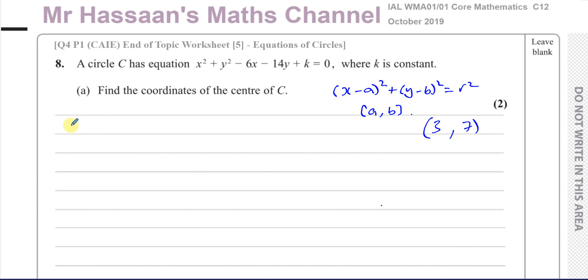We might need to have an expression for the radius, which will be easier if we have completed the square. So I would complete the square even though we can see the answer is 3, 7 straight away. We have x² - 6x + y² - 14y = -k.